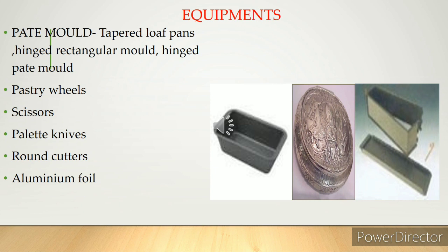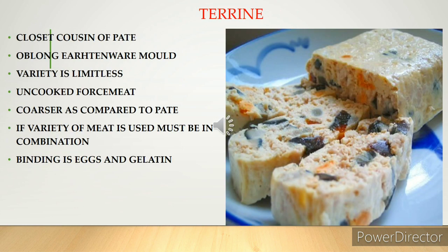The pâté is finished with aspic jelly. The equipment used includes a pâté mold, which is greased and lined with dough. Force meat is added, then covered with dough. Two holes are made through which chimneys are inserted so steam can escape, and the mold is placed inside the oven for cooking.